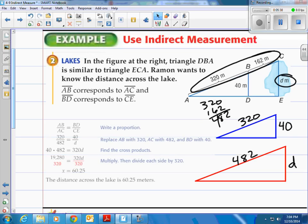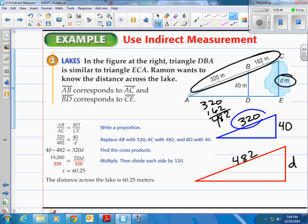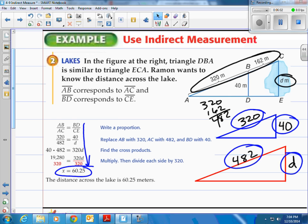And here's what they do for us in the book. They do exactly what we've done there. They've related now. 320 relates to 482, their corresponding sides. And then 40 relates to D. Those are corresponding sides. And then of course they've solved. And we have that the lake has a measure of 60.25 meters.